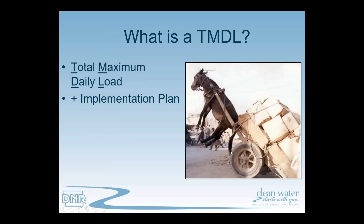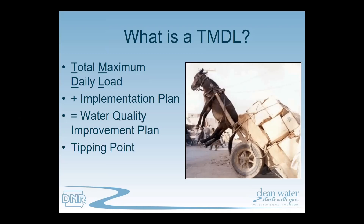The TMDL is also the document itself. We use the term for both the equation — the specific number — and the document presenting it. The TMDL plus the implementation plan together create what we call a Water Quality Improvement Plan. Sometimes we use TMDL and Water Quality Improvement Plan interchangeably, but TMDL refers to the number and also the document. Going forward, think of this as the tipping point.